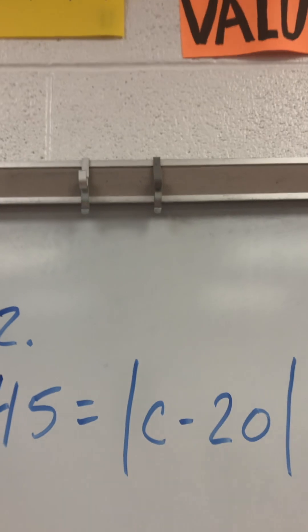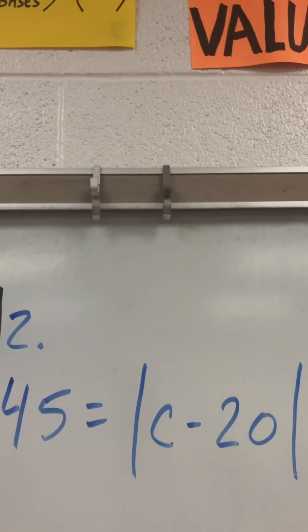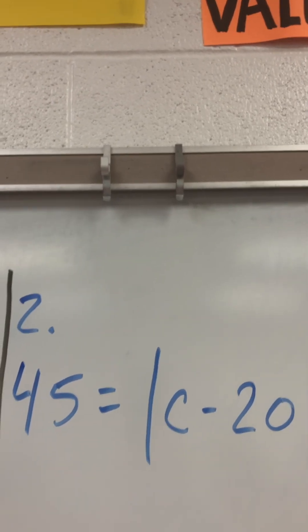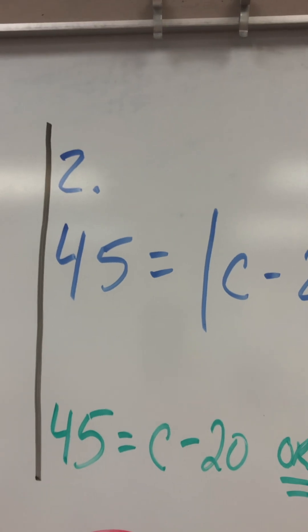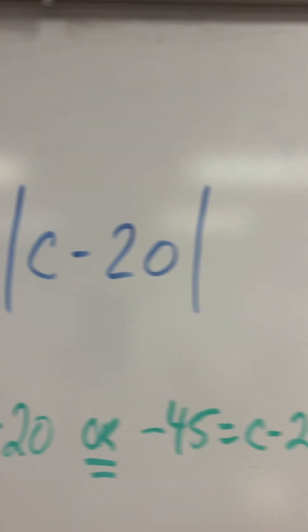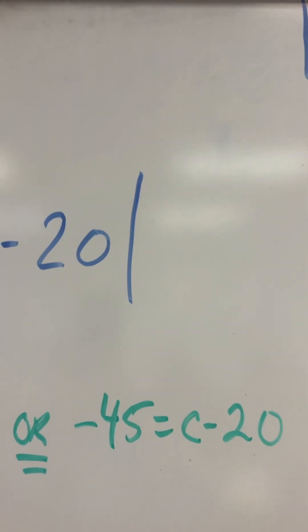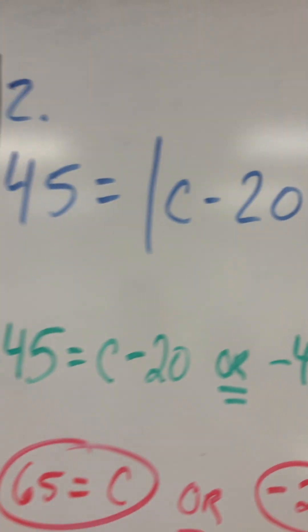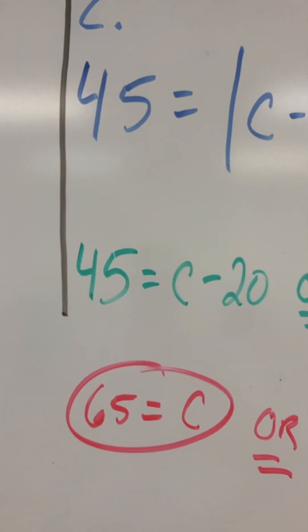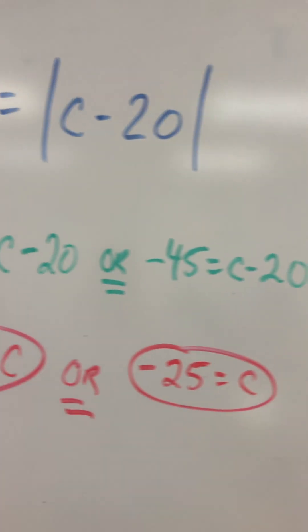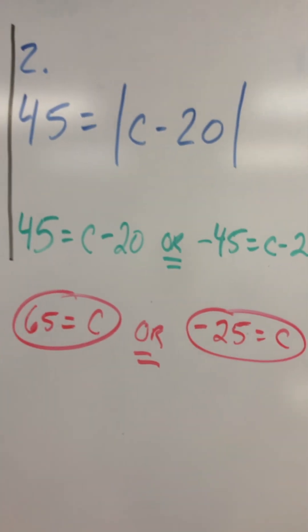45 equals absolute value of c minus 20. So c minus 20 equals 45, add 20 to both sides, you get 65. Or c minus 20 equals negative 45, add 20 to both sides, you get negative 25. Two answers.